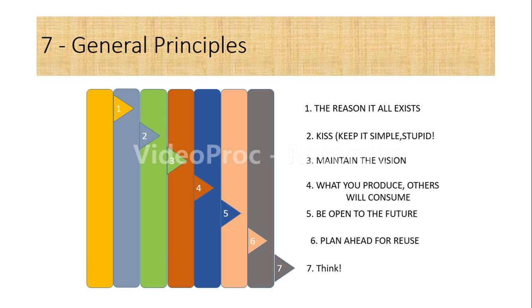The last general principle comes in the form of think. This is the last principle where placing clear, complete thought before action always produces better results. These are the seven general principles for developing software.